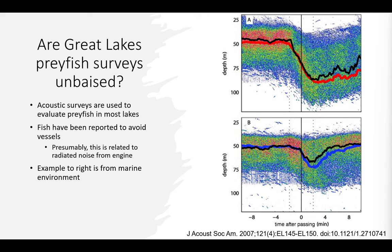In acoustic surveys, avoidance may not always be the case. What I'm showing here is more acoustic data from marine systems. You can see clearly a layer of fish, and then a vessel overtaking an acoustic device. The fish respond to the vessel both before it arrives and while it's there — they remain at depth for some time, and then after the vessel passes they return to the starting layer. If this is occurring in acoustic surveys in the Great Lakes, then we're potentially misclassifying fish as deeper fish, or underestimating biomass or the average size of these animals.